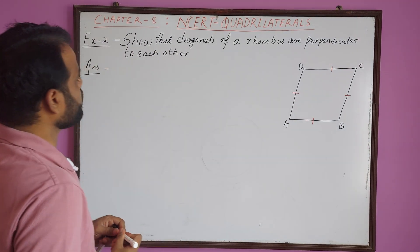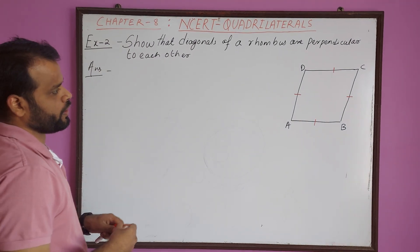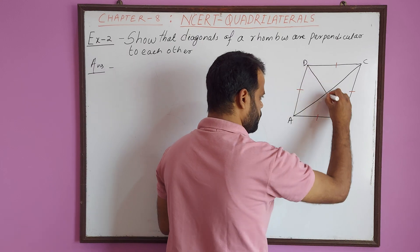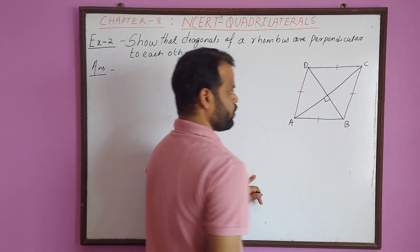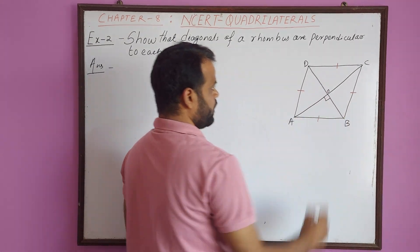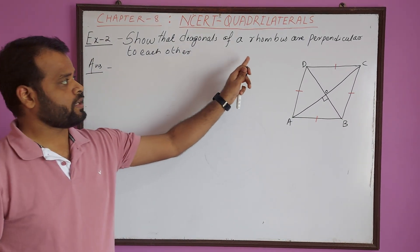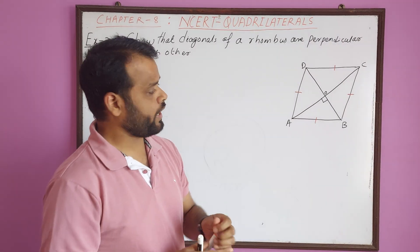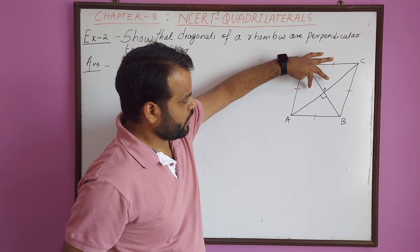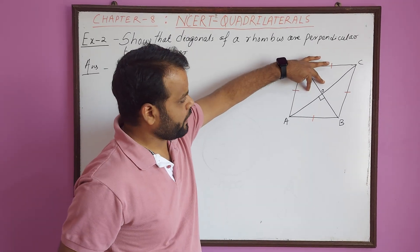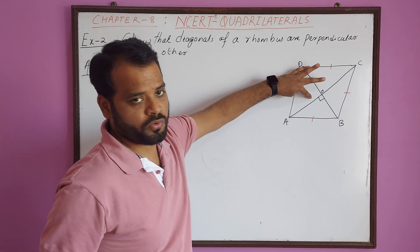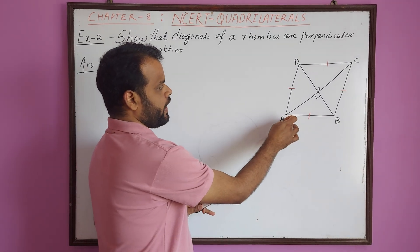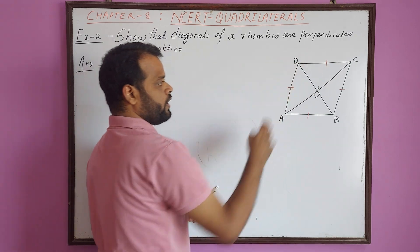We have to prove that the diagonals of a rhombus are perpendicular to each other, meaning AC is perpendicular to BD. In order to prove that the diagonals are perpendicular, we take any two adjacent triangles. Through the linear pair property, we can prove it is perpendicular. So let us take triangle AOD and triangle COD.